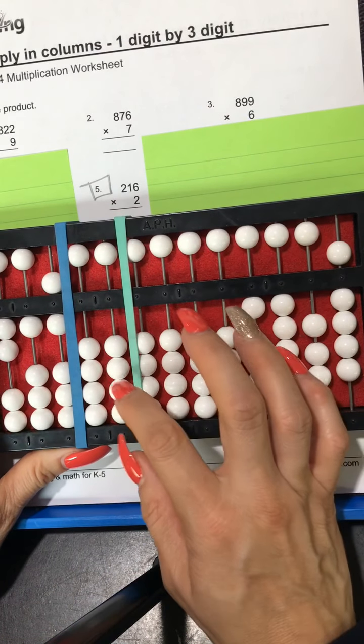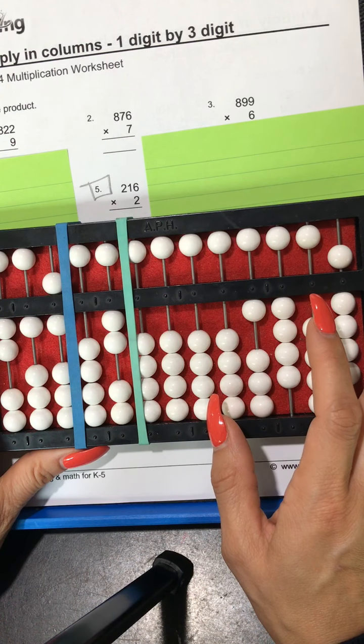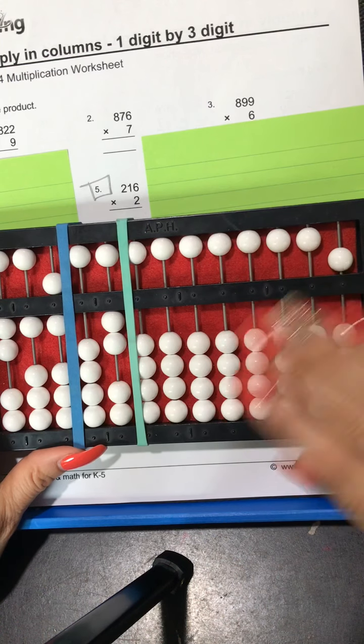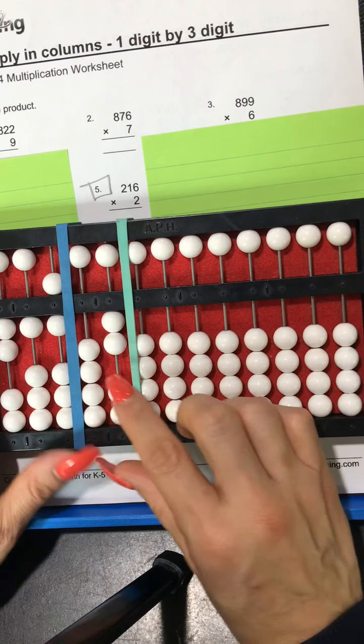And on the other side I want you to set 2 because we're multiplying by 2. So 216 times 2. So what I want you to do is make sure the rest of your abacus is cleared on the right hand side, okay? And here we go.